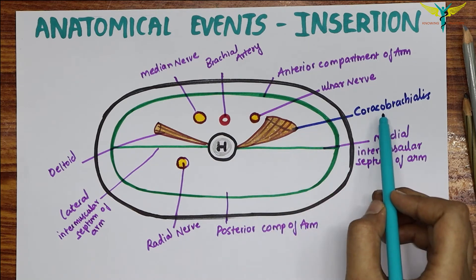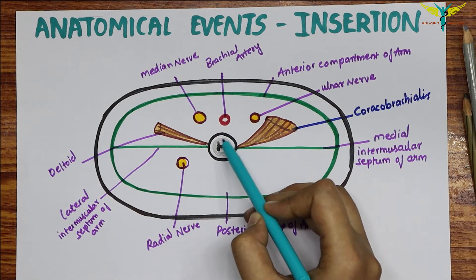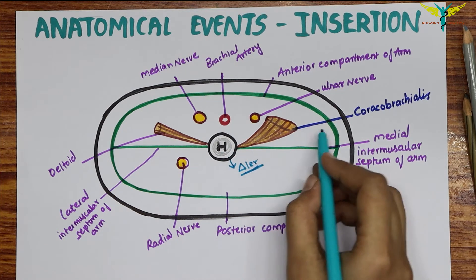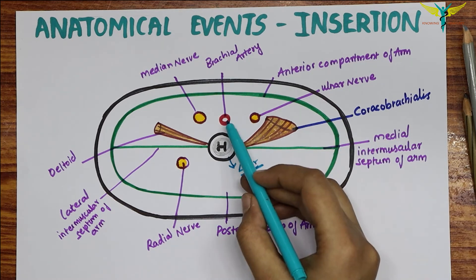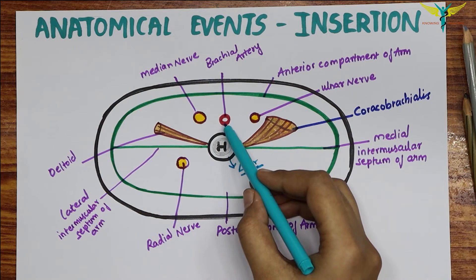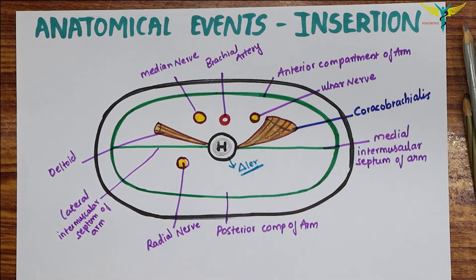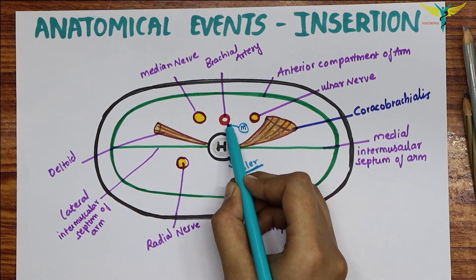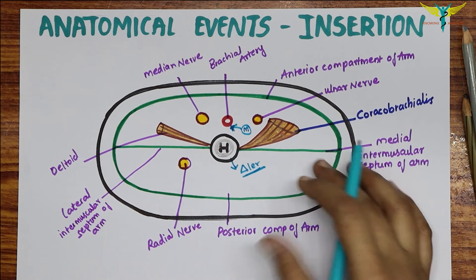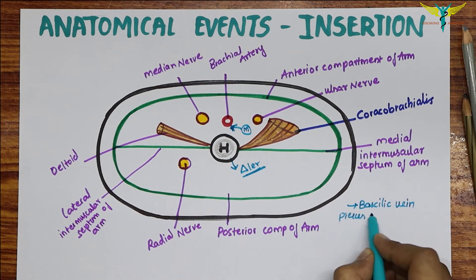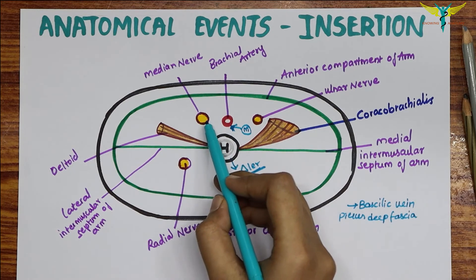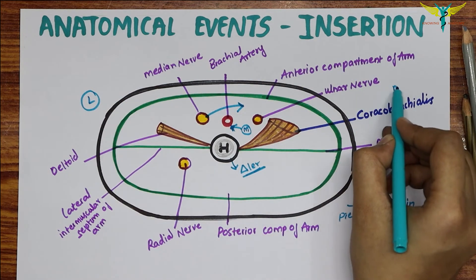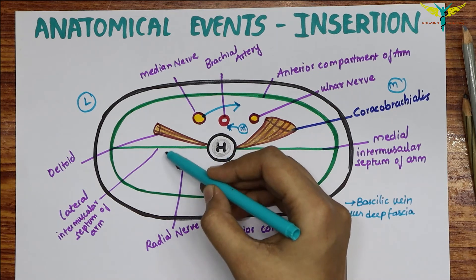The first anatomical event at the site of insertion of the coracobrachialis is that the circular shaft of the humerus becomes triangular below this level. In the brachial artery, it passes from the medial side of the arm to its anterior aspect. The basilic vein pierces the deep fascia here, and the median nerve crosses in front of the brachial artery from the lateral side to the medial side.